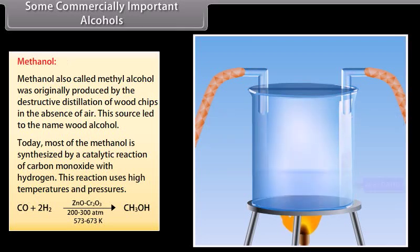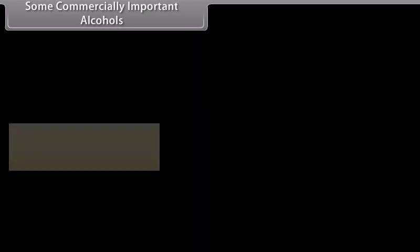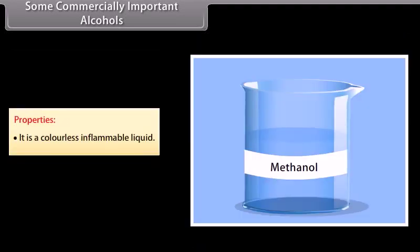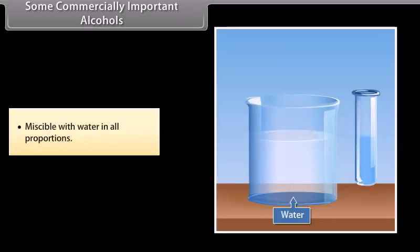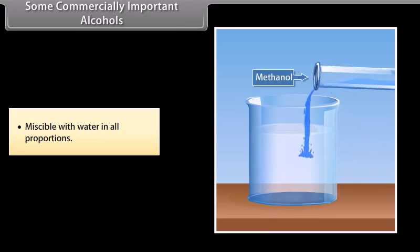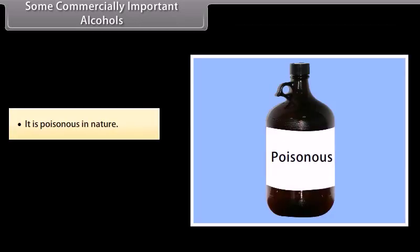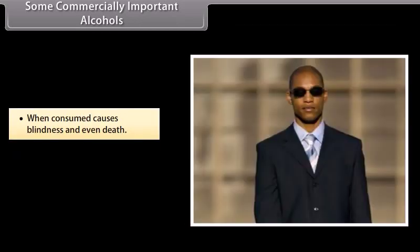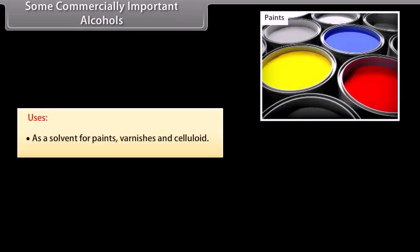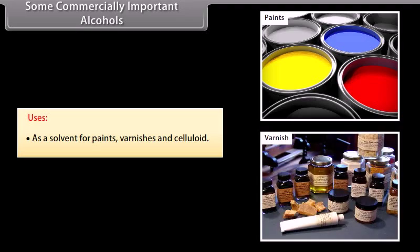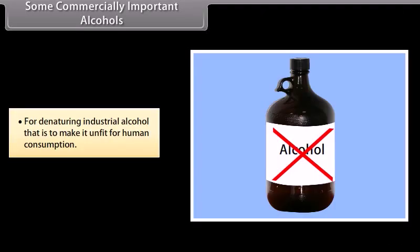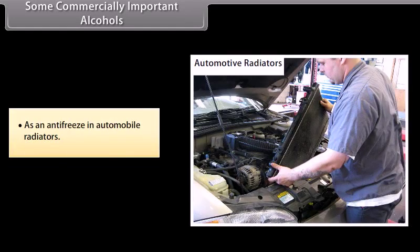This reaction uses high temperatures and pressures. Properties: methanol is a colourless, inflammable liquid, miscible with water in all proportions, and poisonous in nature — when consumed, it causes blindness and even death. Uses: as a solvent for paints, varnishes and celluloid; for denaturing industrial alcohol to make it unfit for human consumption; and as an antifreeze in automobile radiators.